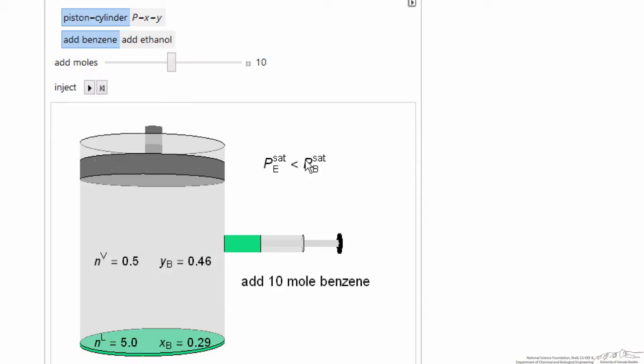So here's the interactive simulation where we're starting out with liquid phase, 5 moles, and a half mole vapor phase, and then the mole fractions of benzene in each phase are given.